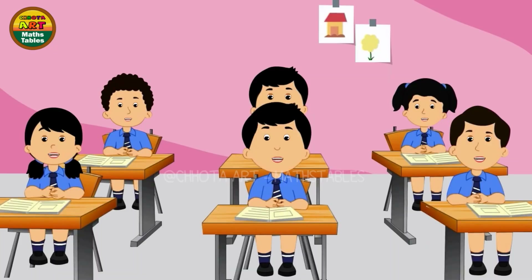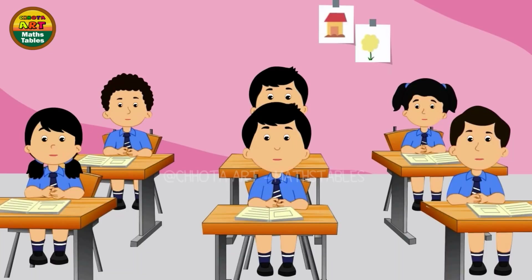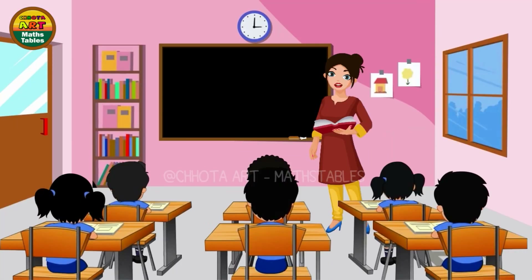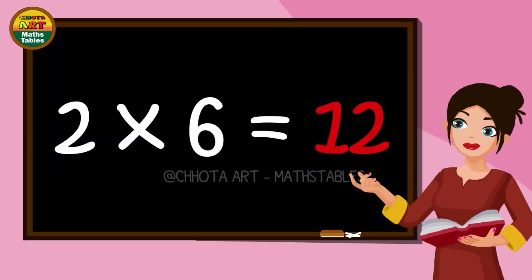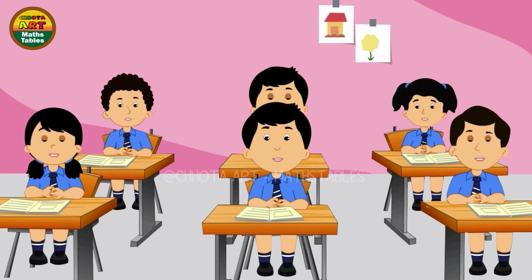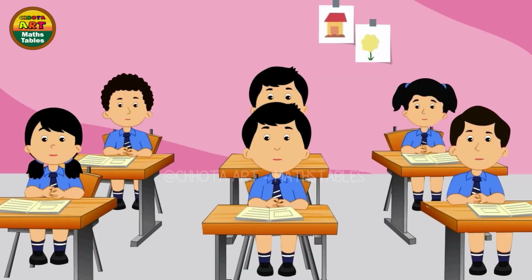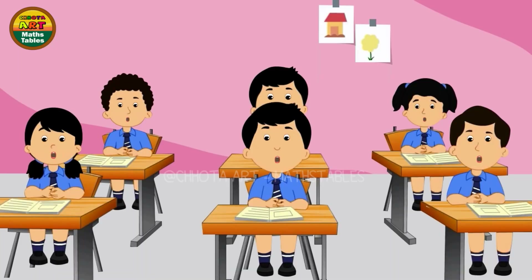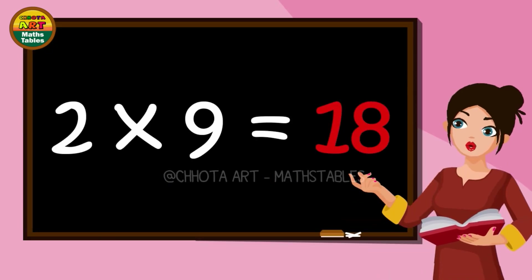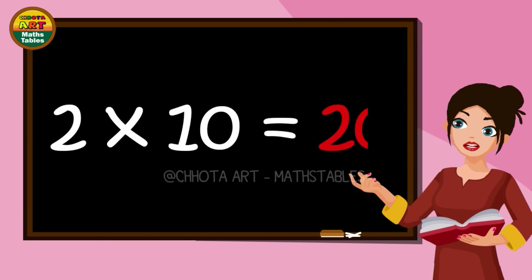2 × 4 = 8, 2 × 5 = 10, 2 × 6 = 12, 2 × 7 = 14, 2 × 8 = 16, 2 × 9 = 18. Two tens are twenty.